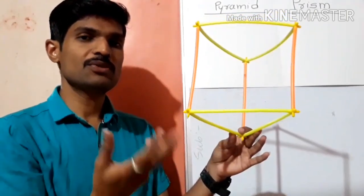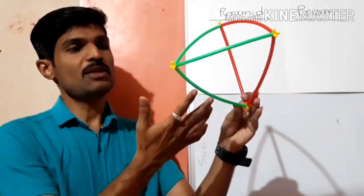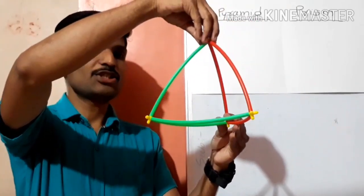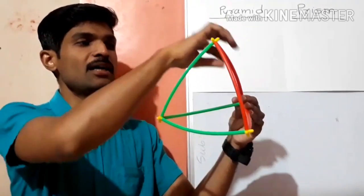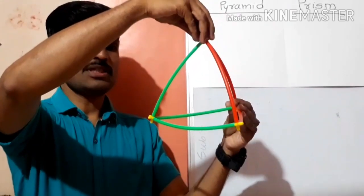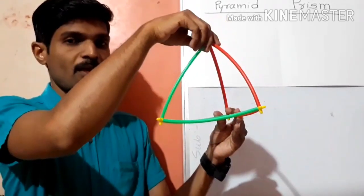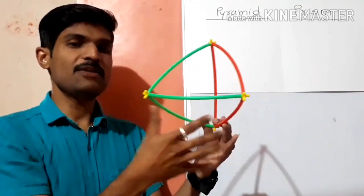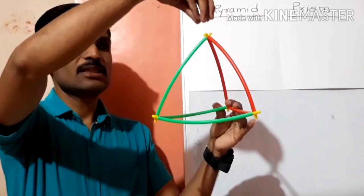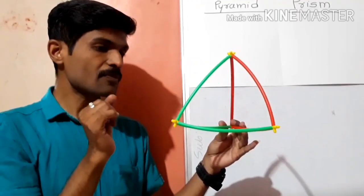A cube has a square base, so we also name it a square prism. When the base shape is changed but there is still a flat top face, it is still called a prism — but we change the name, like triangular prism. Now, for pyramids: the shape is triangular but when we look at the top, all the edges meet at one point. Such shapes are called pyramids — triangular pyramid. Any shape with a different base, such as a square base, is called a square pyramid.